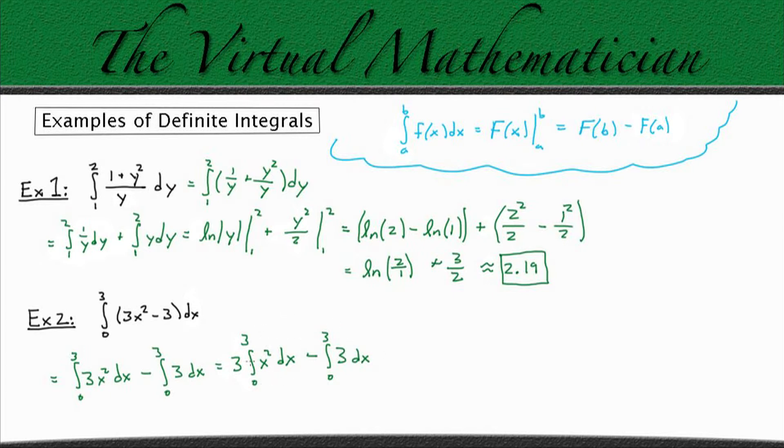And we're going to need to do a power rule for the first integral as well. So these integrals are going to become 3 times x cubed over 3 evaluated from 0 to 3, just using a power rule there, minus 3x evaluated from 0 to 3.